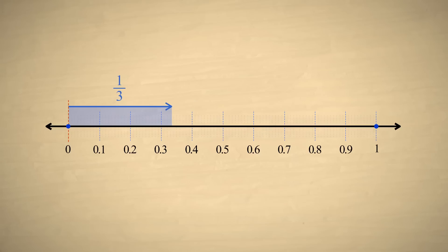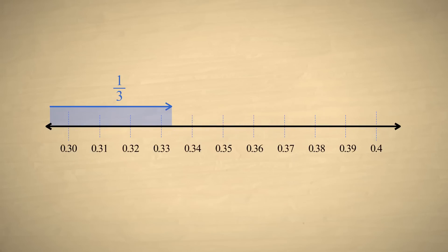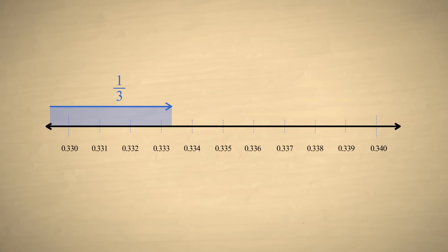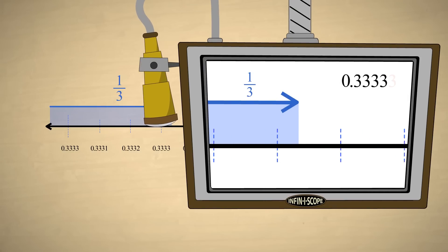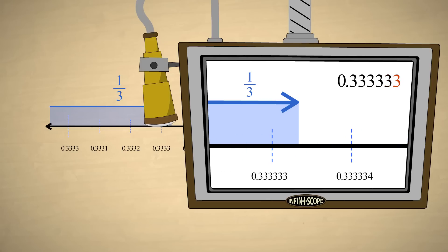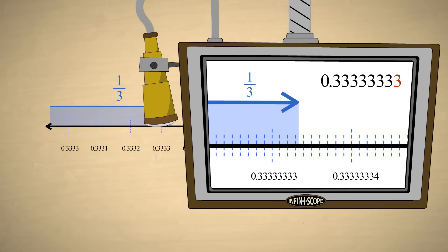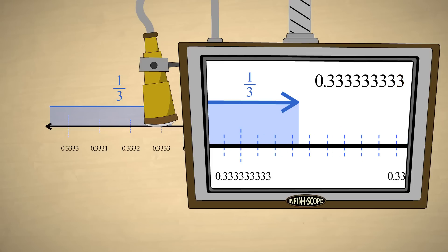On the other hand, the fraction one-third is larger than three-tenths but smaller than four-tenths. If we subdivide these divisions into hundredths, we see that one-third falls somewhere between 33 hundredths and 34 hundredths. If we subdivide into thousandths, one-third falls between 333 thousandths and 334 thousandths. Subdividing into ten-thousandths, one-third still falls between two divisions — larger than .3333 but smaller than .3334. We can repeat this process indefinitely; no matter how close we zoom in, one-third will never fall exactly on a division. We will just keep adding threes after the decimal point forever.